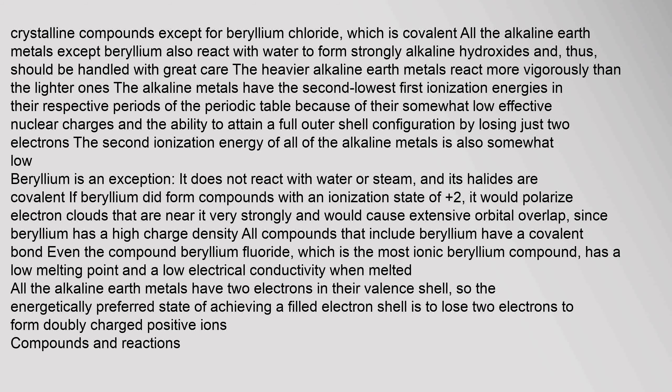The alkaline earth metals have the second lowest first ionization energies in their respective periods of the periodic table, because of their somewhat low effective nuclear charges and the ability to attain a full outer shell configuration by losing just two electrons. The second ionization energy of all of the alkaline earth metals is also somewhat low — beryllium being an exception.